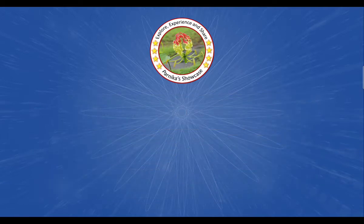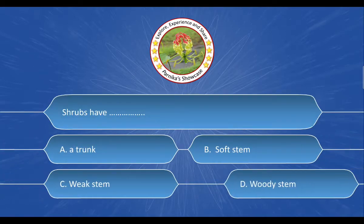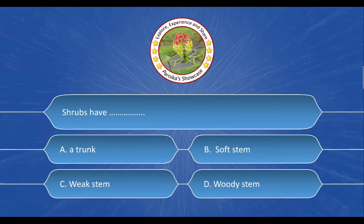Next question: The options are A. A trunk, B. Soft Stem, C. Weak Stem, D. Woody Stem. And the correct answer is Option D. Woody Stem.